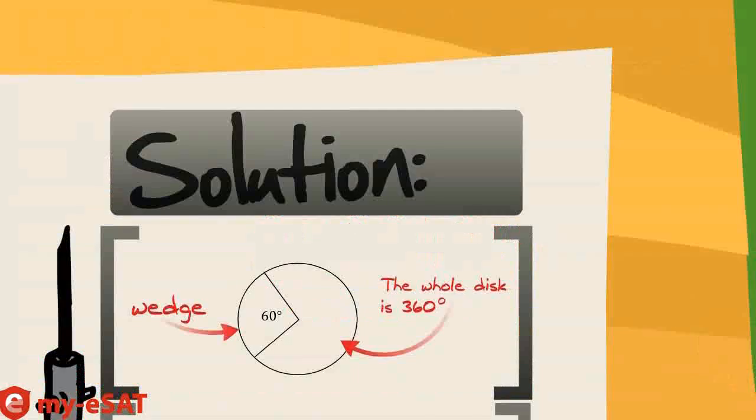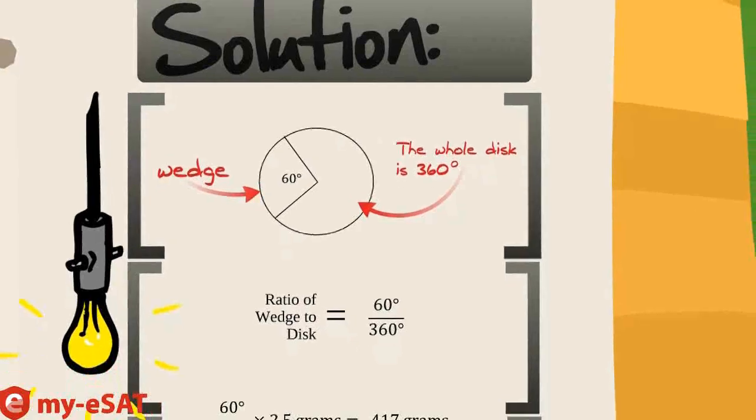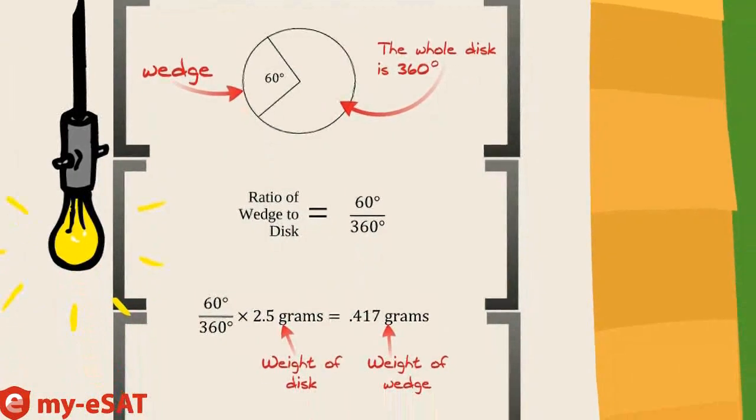Okay, let's start off by using Circle Property 1. We know that the sum of the entire angle is 360 degrees. If you cut out a wedge that forms a 60 degree angle, then if we find the ratio of that degree to 360 degrees, the total, we'll be able to find out what ratio of the weight was lost. So, set up a ratio of 60 to 360. Multiply that by the original weight of the disc, 2.5 grams, and we get the wedge weighs 0.417.